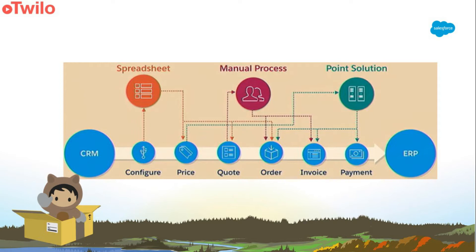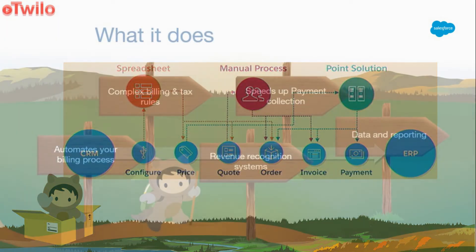The order object lives in the CPQ package and acts as the intersection between Salesforce CPQ and Salesforce Billing. Therefore, Salesforce Billing picks up the order record for invoicing, payment and revenue recognition. ERP platforms are complemented by Salesforce Billing as they convert Salesforce CPQ's data into transactional data. The ERP system will inherit the matching data, which can then be used for creating general ledger and financial reports. At the end of the day, Salesforce Billing figures out how much you get paid and when you get paid.